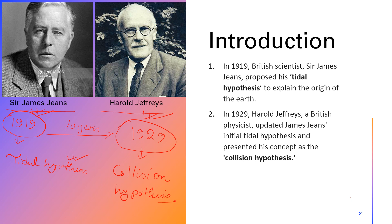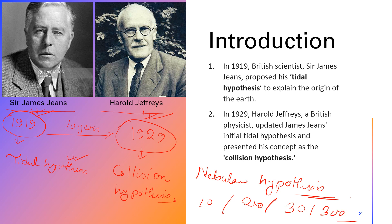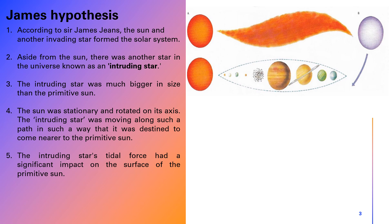One thing to understand clearly is that till date we accept the nebula hypothesis, which we have already discussed — it is the most accepted hypothesis related to the origin of our solar system. But after some years, scientists may find evidence that proves or declines the nebula hypothesis. New theories may be proposed, and that scientist could be anyone among you.